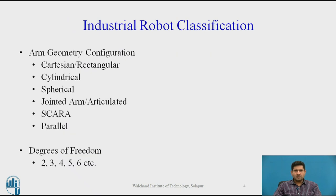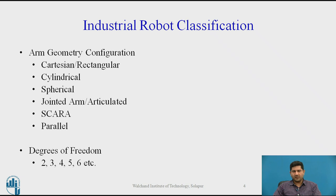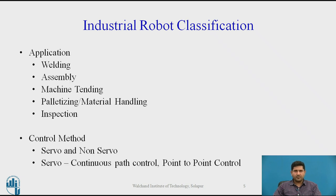We also looked at the classification of industrial robots in the previous session. As per most textbooks, you have Cartesian, cylindrical, spherical, jointed arm, SCARA, and parallel configurations. Another alternative way of classifying is by degrees of freedom. Typically you won't get industrial robots with less than four degrees of freedom from a practical point of view — they invariably have four, five, or six degrees of freedom.